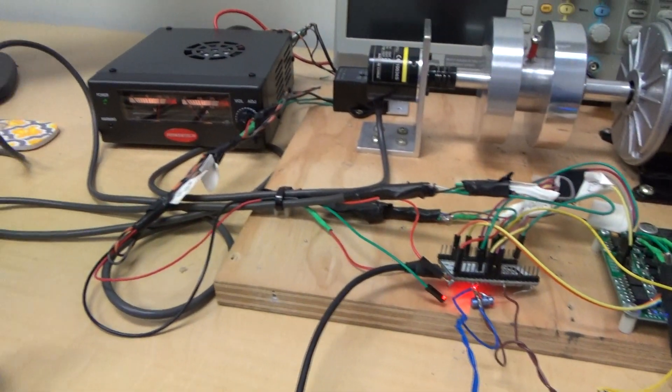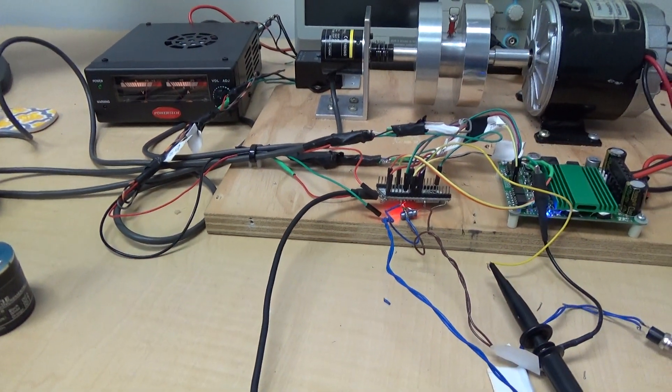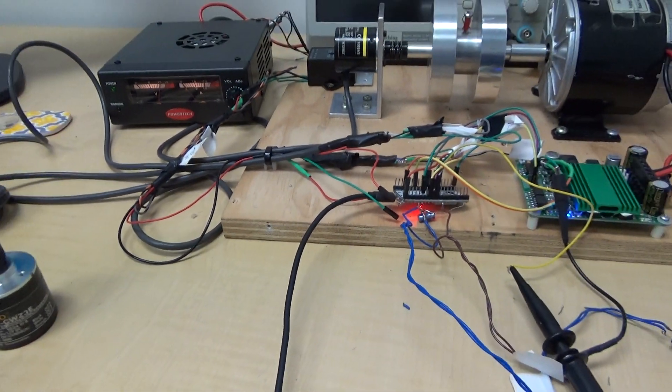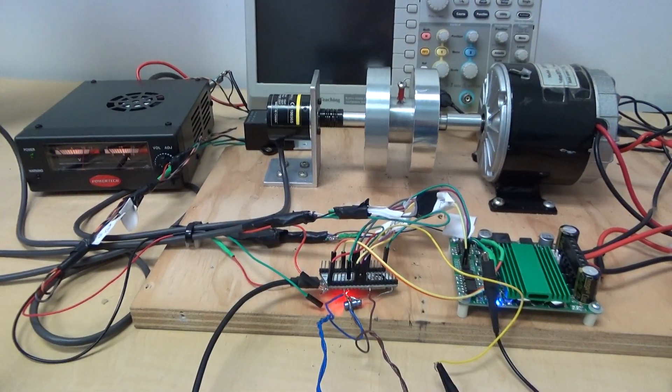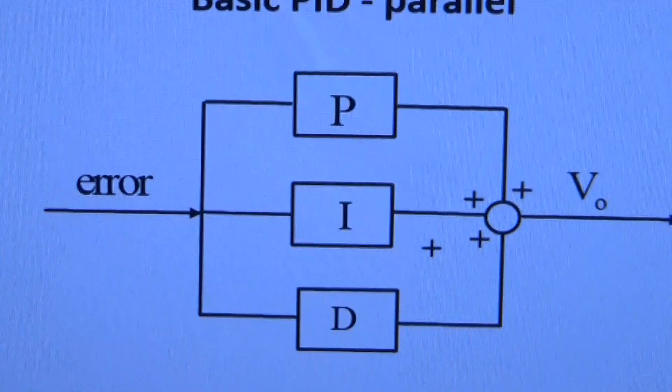Anyway, back to the issue in hand, which is, how do we control this big motor? I've shown you this smaller motor with the Arduino and the ESP32. What about the big one? Well, there's two ways, of course, the position control, whether it's analog or digital.